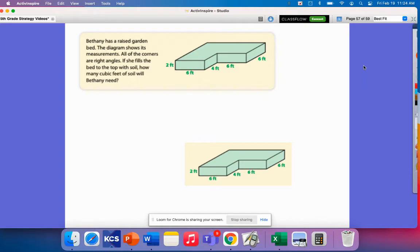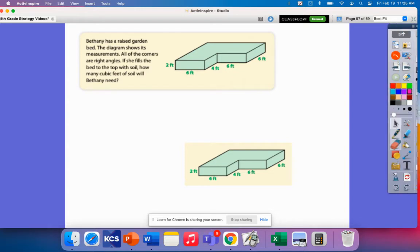Let's look at our first example problem. It says Bethany has a raised garden bed. The diagram shows its measurements. All of the corners are right angles. If she fills the bed to the top with soil, how many cubic feet of soil will Bethany need?